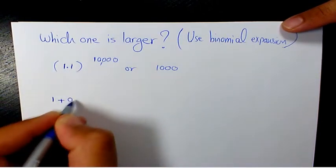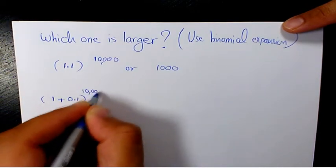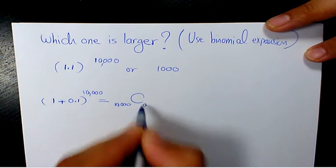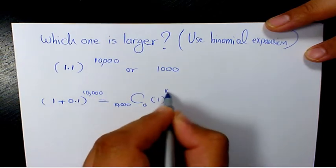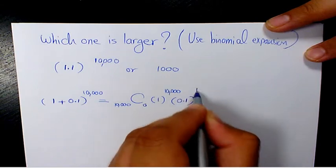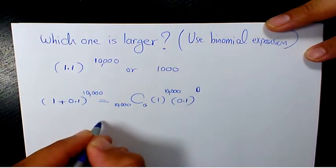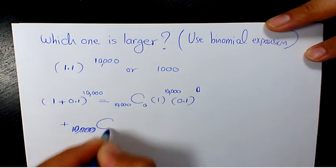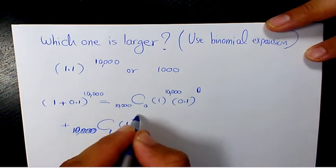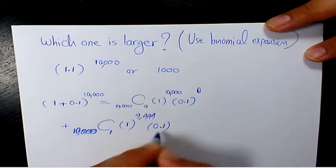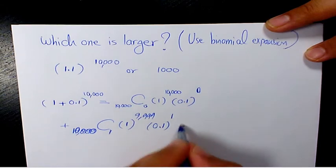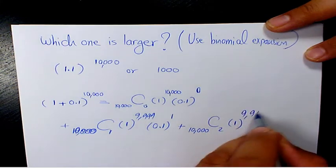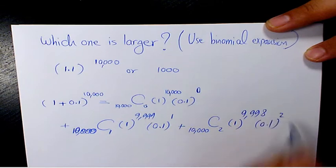1.1 is (1 + 0.1) to the power of 10,000, which will be: C(10000, 0) · 1^10000 · 0.1^0, plus C(10000, 1) · 1^9999 · 0.1^1, plus C(10000, 2) · 1^9998 · 0.1^2, and so on.